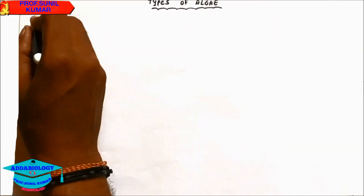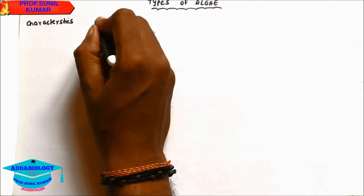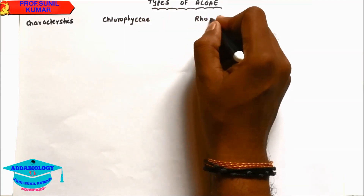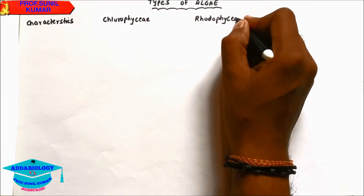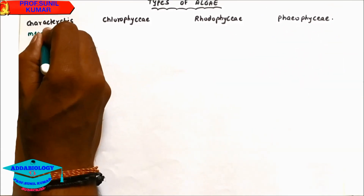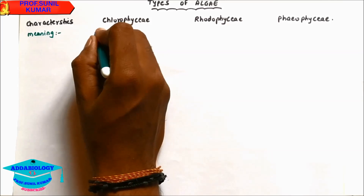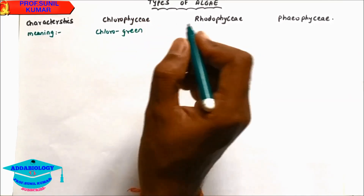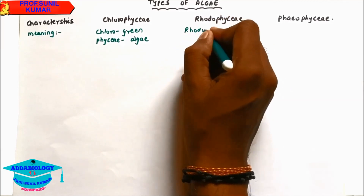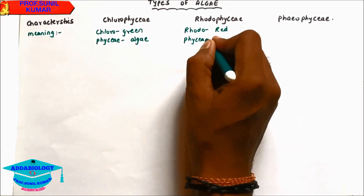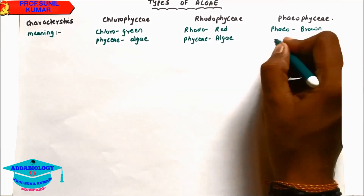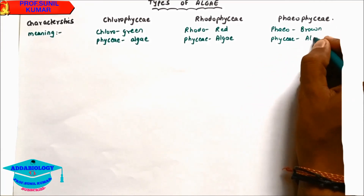Let's understand the three types of algae: Chlorophyceae, Rhodophyceae, and Phaeophyceae. Chloro means green, Rhodo means red, and Pheo means brown — Phyceae means algae in all three. So Chlorophyceae is green algae, Rhodophyceae is red algae, and Phaeophyceae is brown algae.